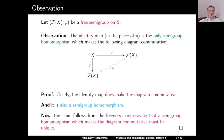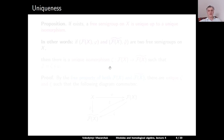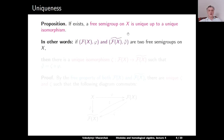Its uniqueness follows directly from the freeness axiom, which says that such a homomorphism should be unique. Now we can use this observation to discuss uniqueness of free semigroups. Proposition: if it exists, a free semigroup on X is unique up to a unique isomorphism. In other words, if we have two free semigroups on X — the first F(X), φ and the other F̃(X), φ̃ — then there is a unique isomorphism ζ from F(X) to F̃(X) such that φ̃ equals ζ after φ.